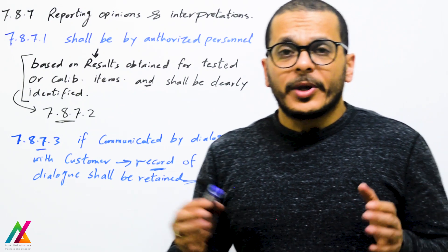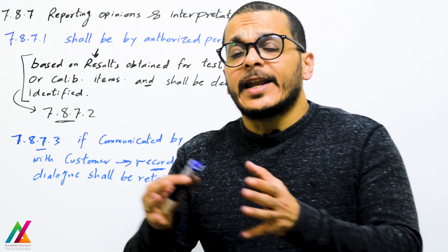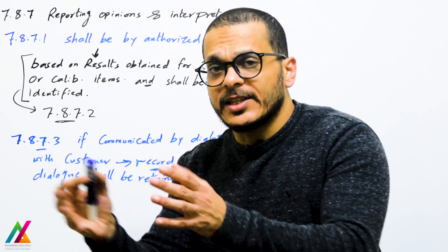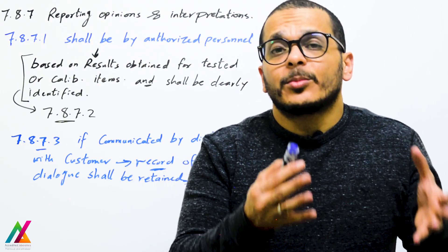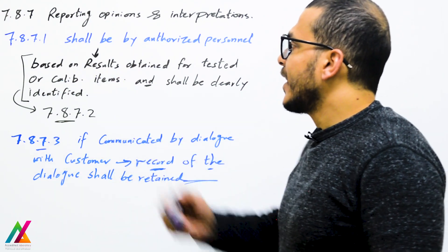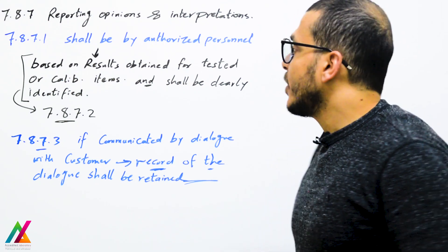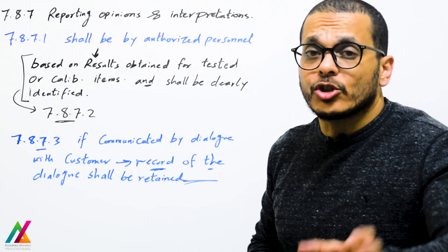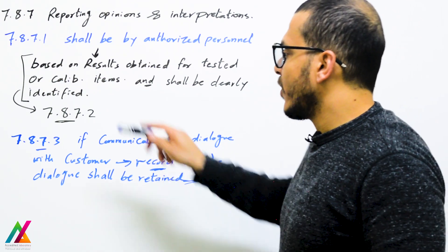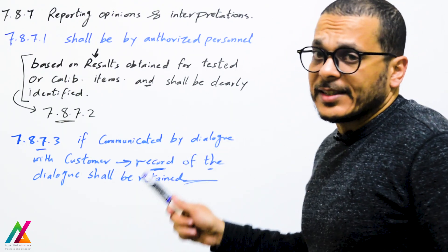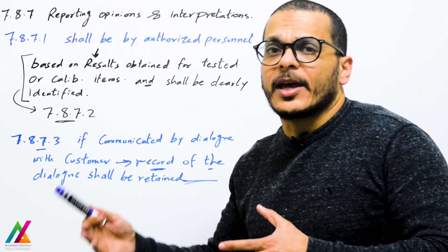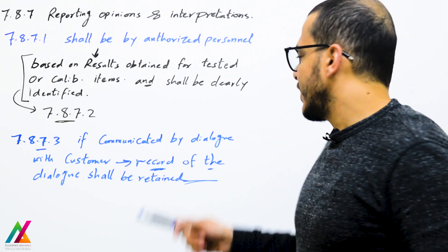Clause 7.8.7 covers opinions and interpretation. If the analyst has any information that will help decision-makers decide about a sample, or if there is any opinion or interpretation of the result that helps the customer understand the result, this should be included. Under 7.8.7.1, opinions and interpretation shall be made by an authorized person responsible for analysis of the sample based on results obtained, and shall be clearly identified. Under 7.8.7.2 and 7.8.7.3, if an opinion or interpretation is communicated by dialogue between the analyst or management and the customer, that dialogue shall be recorded and the record retained.